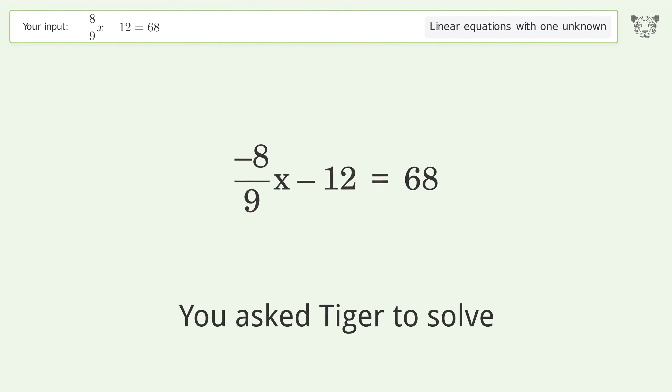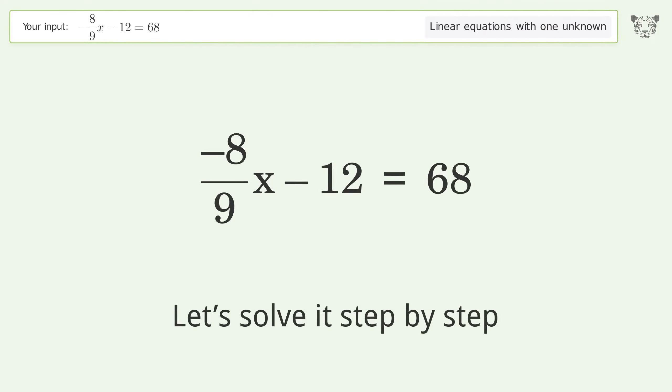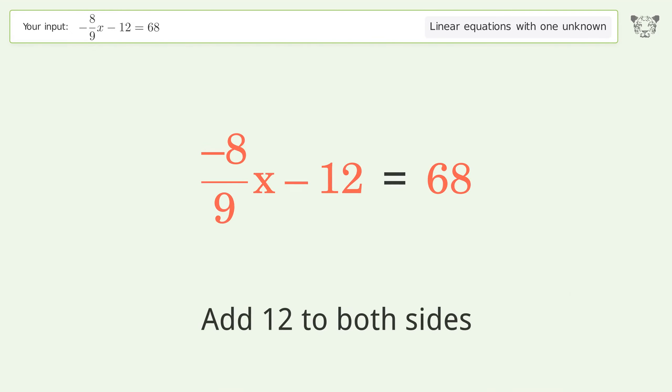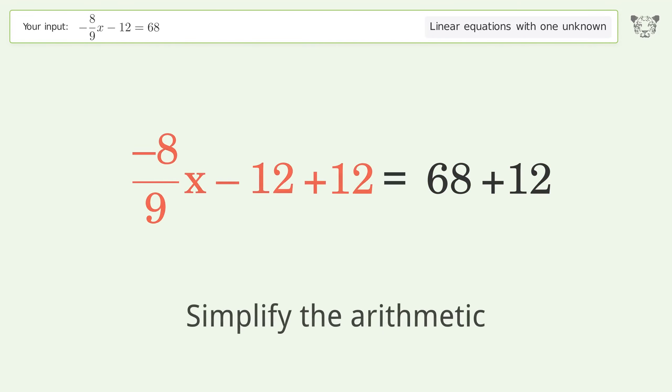You asked Tiger to solve this. This deals with linear equations with one unknown. The final result is x equals negative 90. Let's solve it step by step. Group all constants on the right side of the equation. Add 12 to both sides. Simplify the arithmetic.